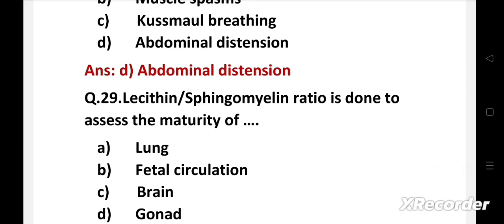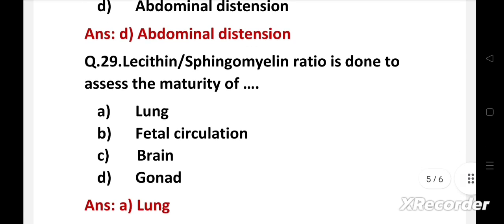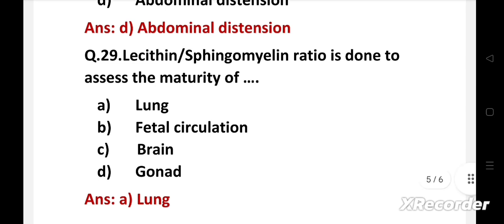Next question. Lecithin sphingomyelin ratio is done to assess the maturity of: Option A: lung, B: fetal circulation, C: brain, D: gonad. Right answer is option A, lung. The lecithin sphingomyelin ratio is the traditional standard for fetal lung maturity testing. The risk of RDS is very low if the lecithin sphingomyelin ratio is greater than two.